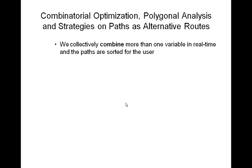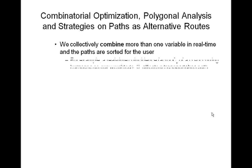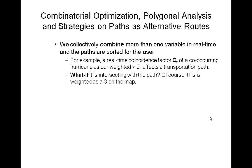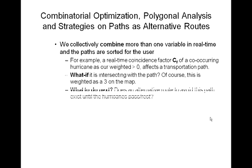We collectively combine more than one variable in real-time, and the paths are sorted for the user. For example, a real-time coincidence factor of a co-occurring hurricane — as our weight greater than zero — affects a transportation path. If it is intersecting with the path, this is weighted as a 3 on the map.